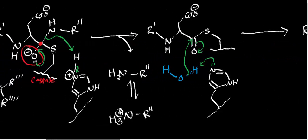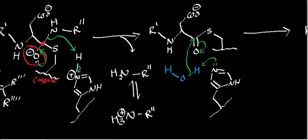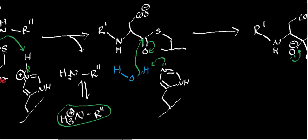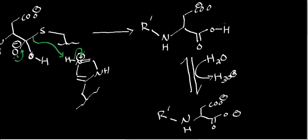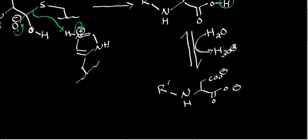If you remember the amine when it was the leaving group — it left as R-NH2, which is neutral, and picked up a proton from solution to generate the protonated form at physiological pH. The carboxylate does a similar thing. Through the mechanism of the enzyme it exists as a carboxylic acid, but very quickly it does another proton exchange with solution and you generate the carboxylate version of the rest of the protein. Because it's a C-terminal protease, the aspartate has a free carboxyl terminus.